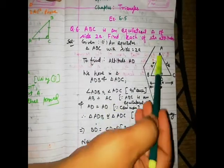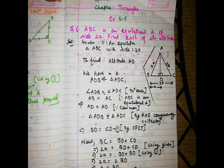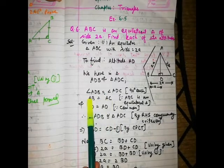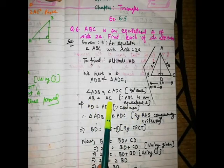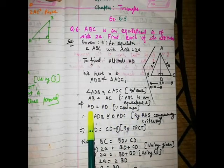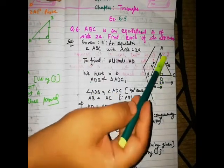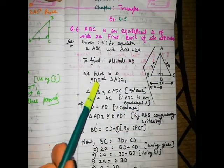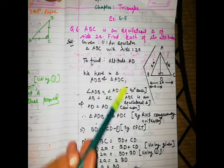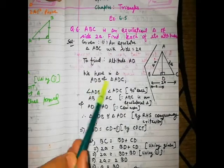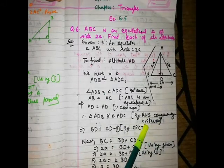AB equals AC, and these are corresponding sides. They are equal because ABC is an equilateral triangle, so all 3 sides are equal. Also, AD is common to both triangles — it is a side of triangle ADB as well as a side of triangle ADC.